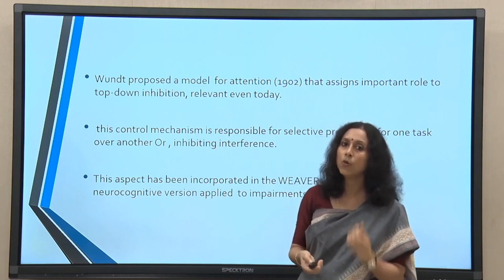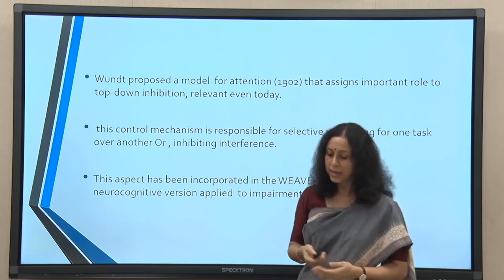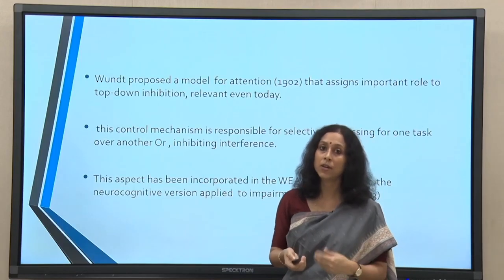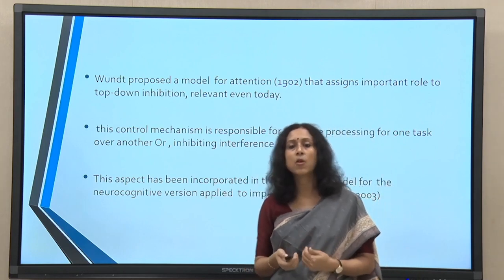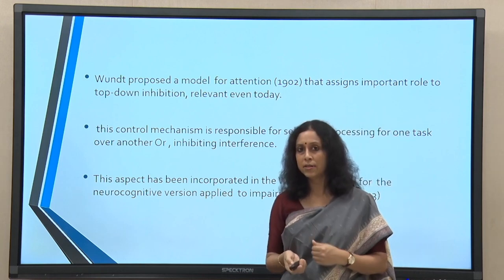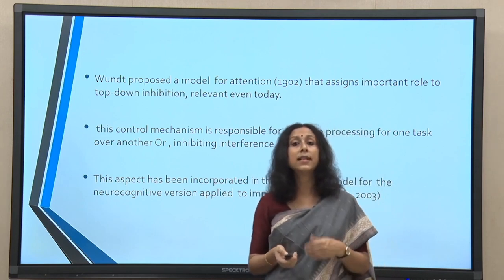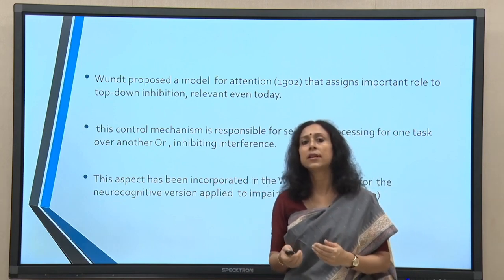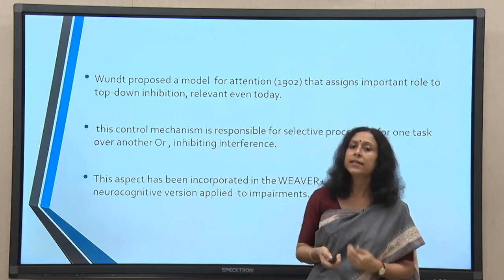Wundt actually talked about top-down inhibition and gave a lot of importance to top-down attentional mechanisms. This control mechanism is responsible for selective processing — choosing one task over another. We need to pay attention to something that is more relevant for our current goal, and sometimes inhibit interferences. For example, in a cocktail party conversation, there are simultaneously many conversations going on.